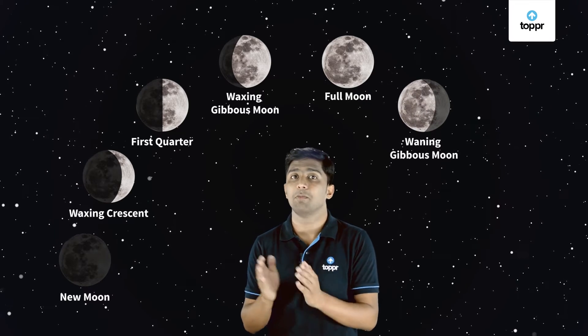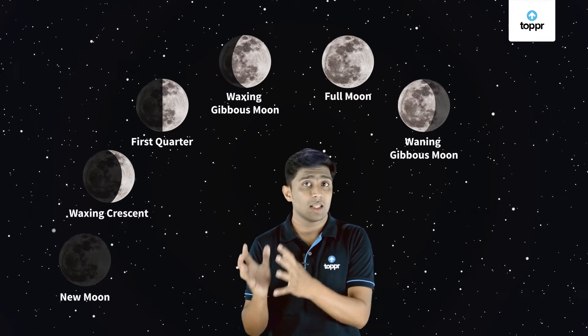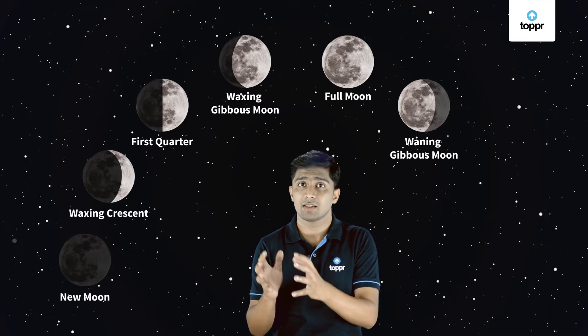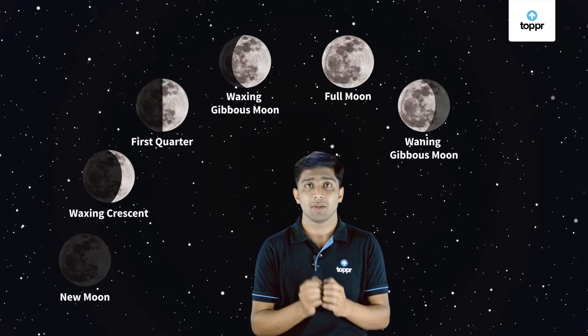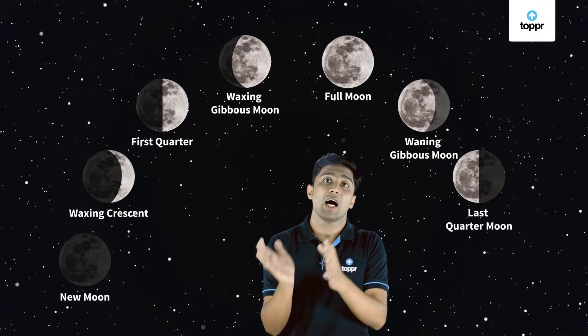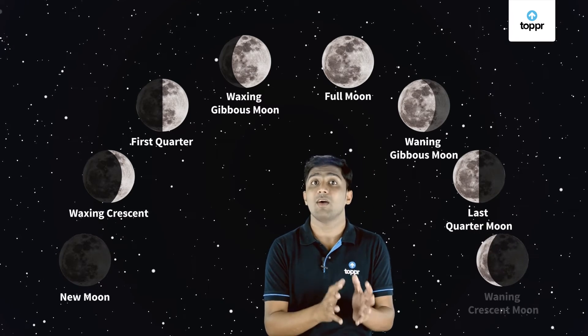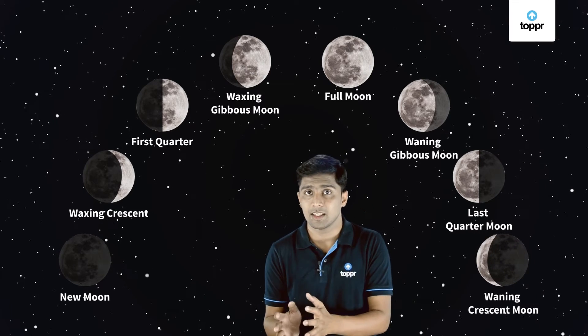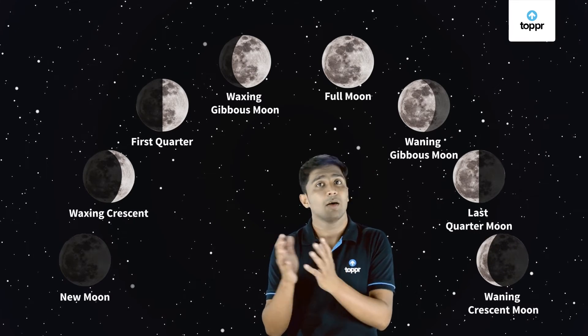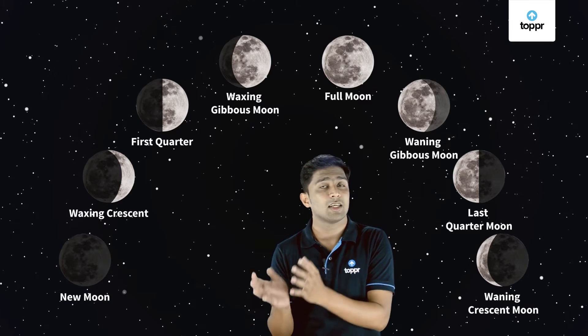Phase 6 is the waning gibbous moon. Waning means the moon starts decreasing. In this phase, the moon starts decreasing its shape. Phase 7 is the last quarter. In this phase, the moon appears half lit again. Phase 8 is the waning crescent. This is the last phase before the next new moon.